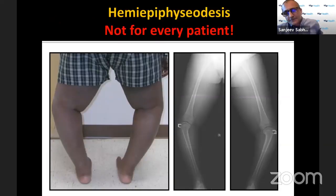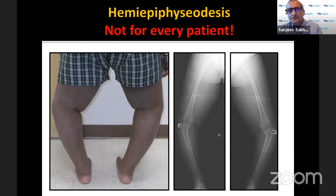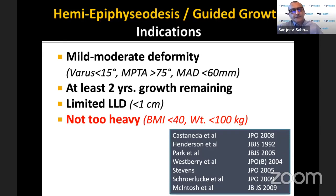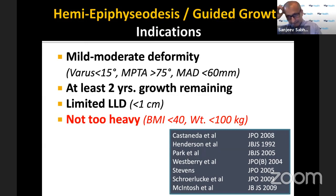Guided growth or hemiepiphysiodesis is not for every child. A much older, severely deformed, quite obese child — not unexpected that this did not work. From the literature, guided growth is most suitable for mild to moderate deformity: varus less than 15 degrees, medial proximal tibial angle greater than 75 degrees, mechanical axis deviation of six centimeters or less, with at least two years of growth remaining and mild leg length discrepancy. Some papers also talk about worse prognosis in the heavier child.